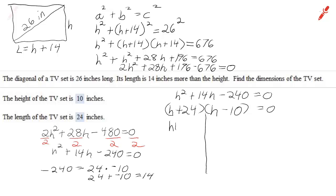H plus 24 times h minus 10. Now I set each factor equal to 0. So that h equals negative 24, or h minus 10 equals 0, so h equals 10.